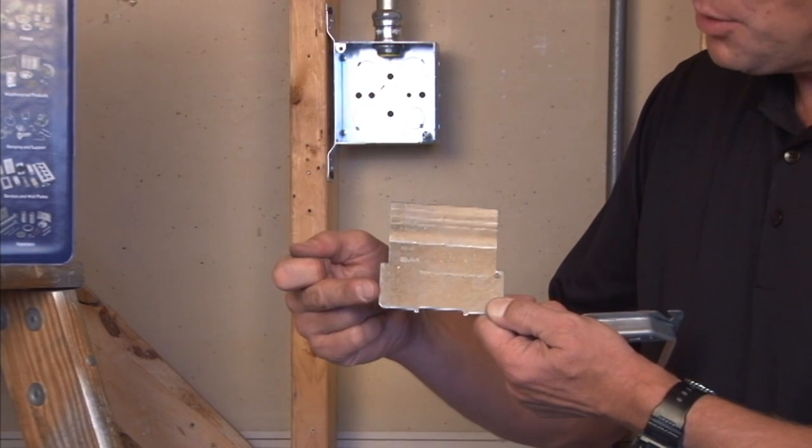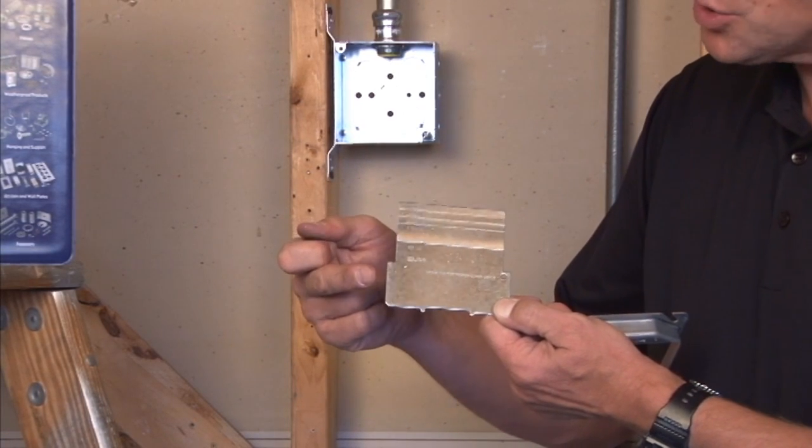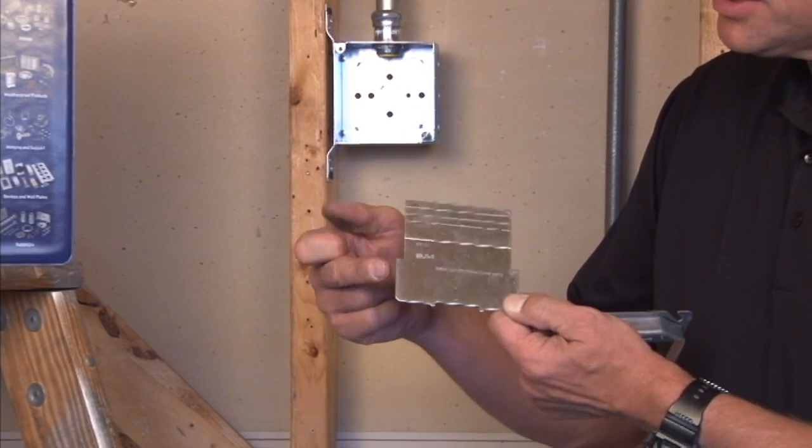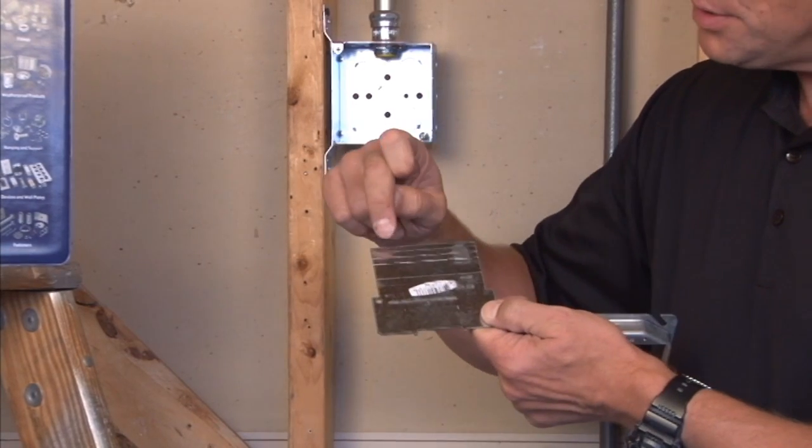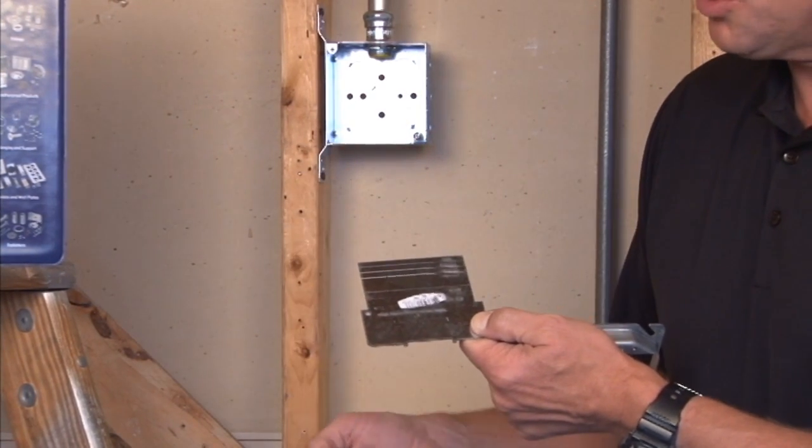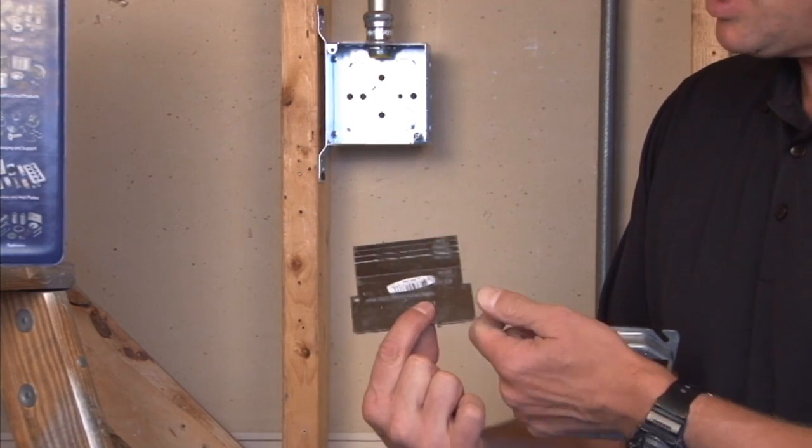They're made for both shallow inch and a half boxes or two and an eighth inch deep boxes. And they come with break off tabs for the desired plaster ring that's going to be attached.